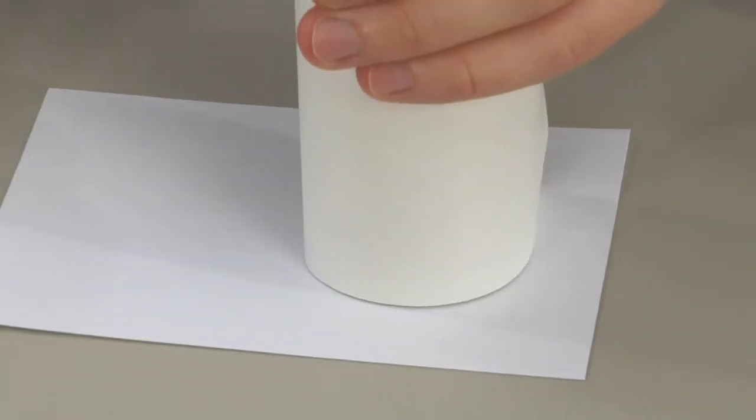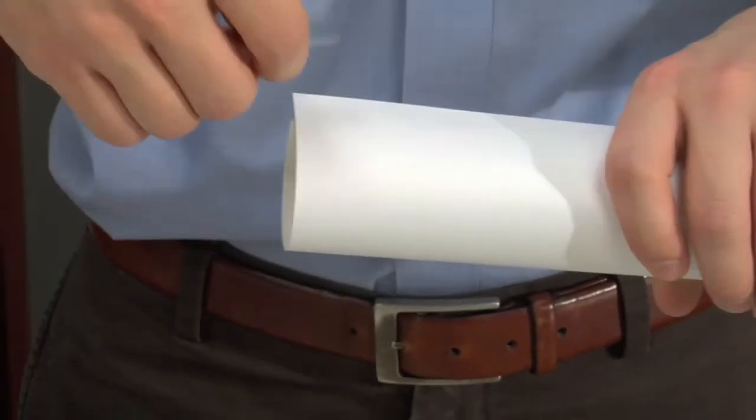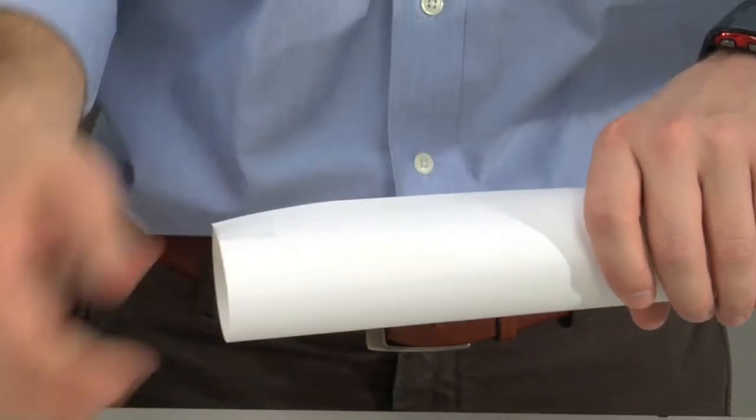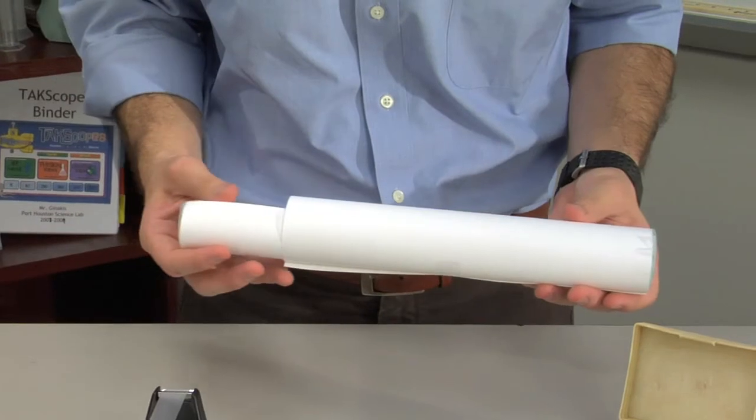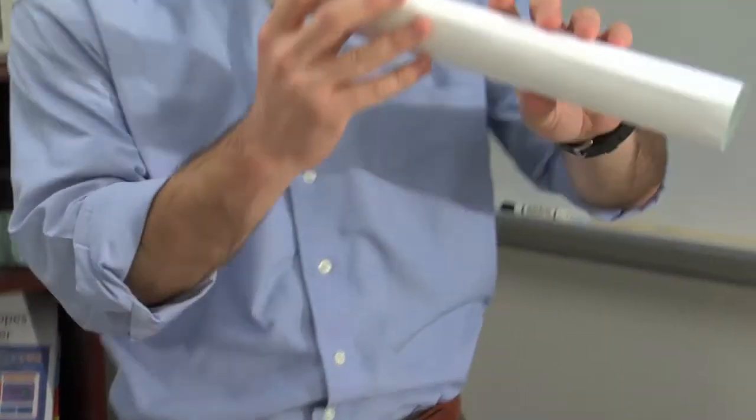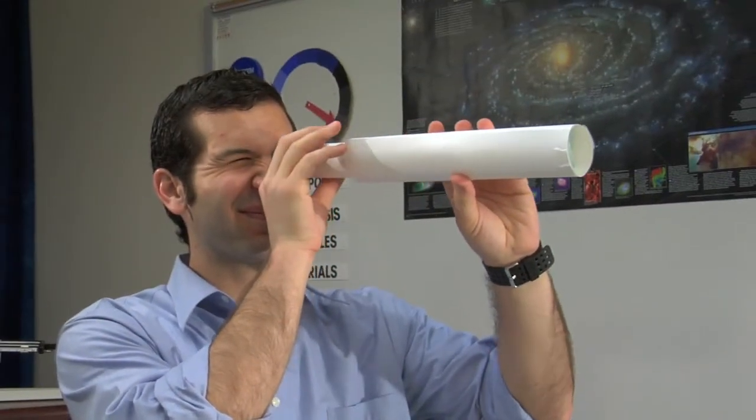Repeat this process with the larger of the two lenses, forming the cardstock around the lens and securing both with tape. Once complete, slide the two tubes together with the lenses facing out on each end.